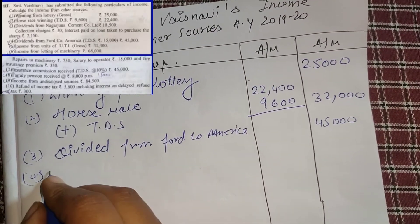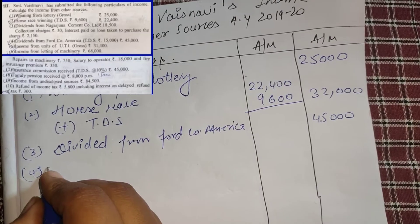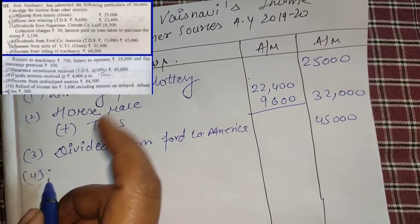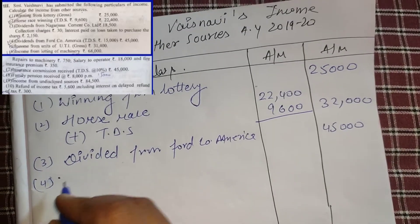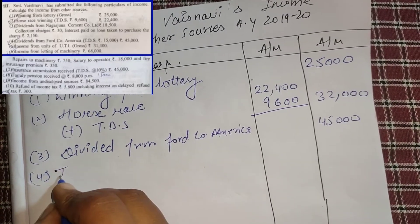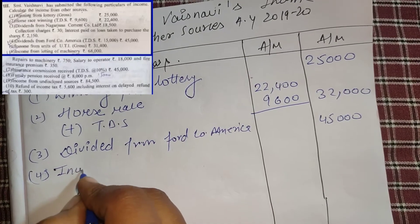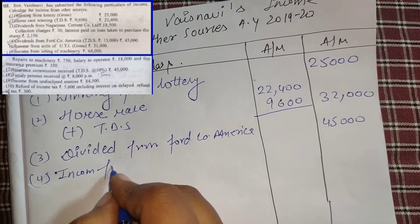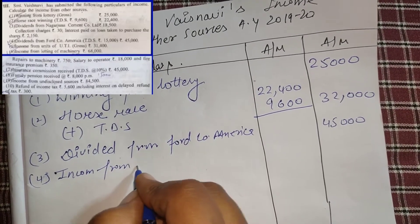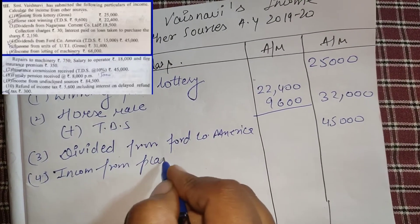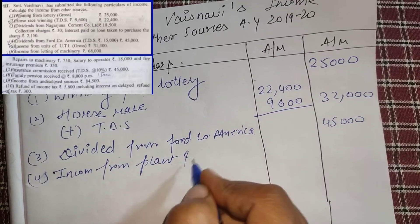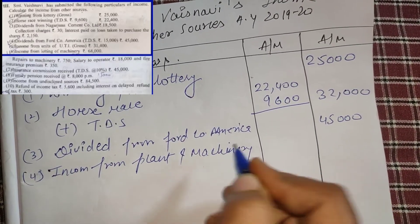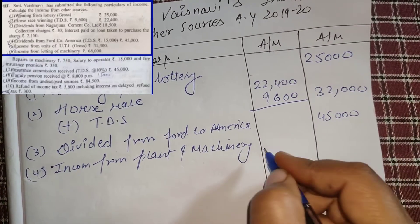Next, income from units of UTI — UTI means Unit Trust of India. Just like life insurance, UTI is also exempt, so this will not come. Next, income from letting off machinery — letting off machinery means plant and machinery — this will be 80,000.